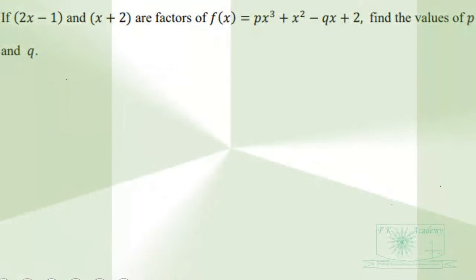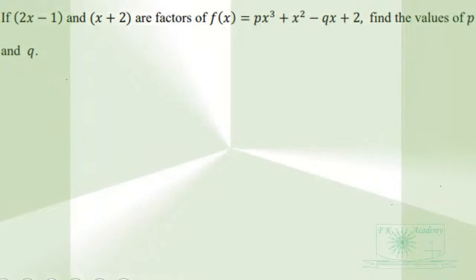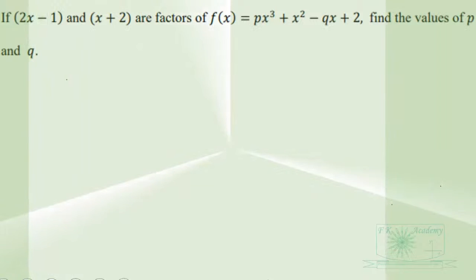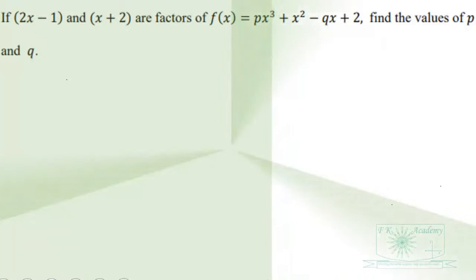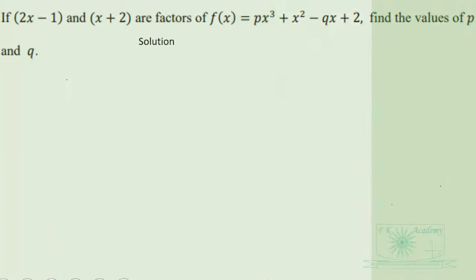This question is on polynomials under the factor theorem. It says: if 2x minus 1 and x plus 2 are factors of f(x) = px³ + x² - qx + 2, find the values of p and q. We apply the factor theorem, which says that if f(x) has a factor x plus a, then f of negative a will equal 0.